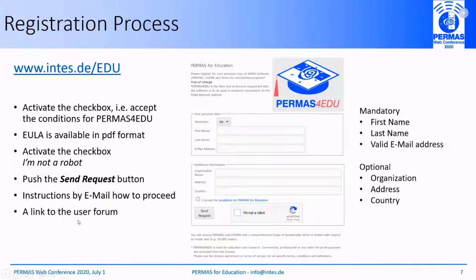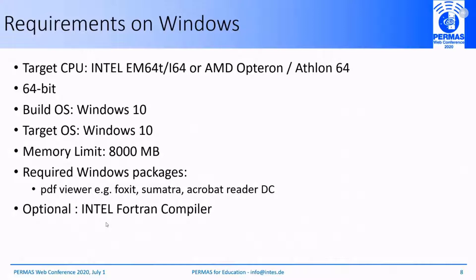There are some requirements with respect to the operating system. For Windows, supported CPUs are Intel and AMD processors. Only 64-bit operating systems are supported. The build operating system is Windows 10, and the target operating system is also Windows 10. We have a memory limit of 8,000 megabytes. Required Windows packages for opening the documentation include PDF viewers like Foxit, Sumatra, and Acrobat Reader. If you want to use Fortran subroutines in your models, you have to install the Intel Fortran compiler on Windows.